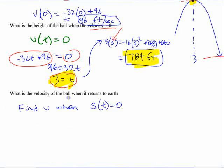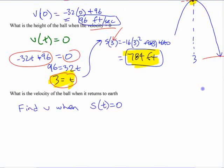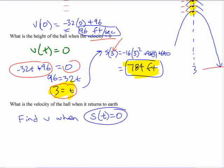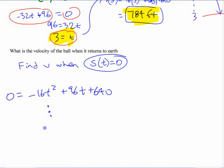What's the velocity of the ball when it returns to Earth? If you went through and did this now and found, you want to find the velocity when the position is zero. You have to take the position function, negative 16t squared plus 96t plus 640. You want to know when that is zero. I think if you go down here and you divide by negative 16, what do you get here? This minus, what is that? 6t plus, what do I have there? 40.